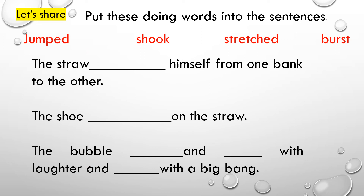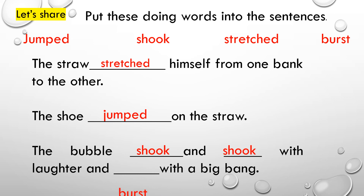Let's share. Put these doing words into the sentences: jumped, shook, stretched, burst. The straw stretched himself from one bank to the other. The shoe jumped on the straw. The bubble shook and shook with laughter and burst with a big bang.